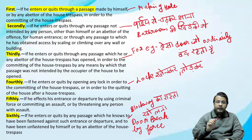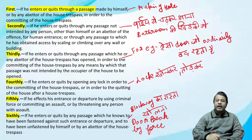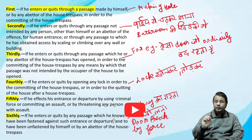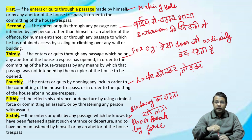Secondly: if he enters or quits through any passage not intended for any person other than himself or an abettor of the offence for human entrance, or through any passage to which he has obtained access by scaling or climbing over any wall or building — for example, pipe से चढ़कर आ जाना, या फिर बाहर की खिड़की में से घुस जाना।